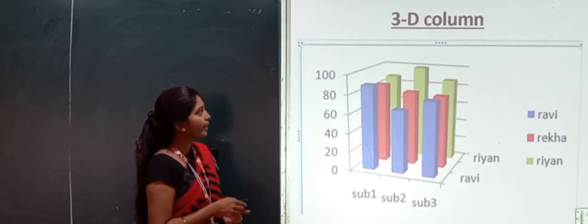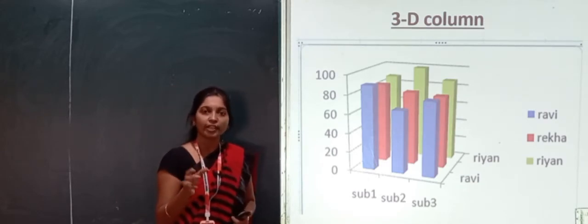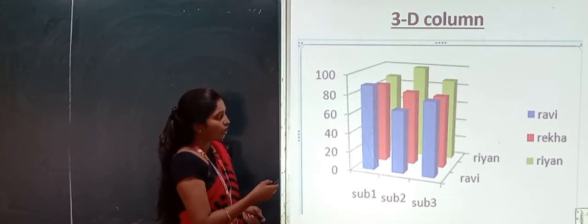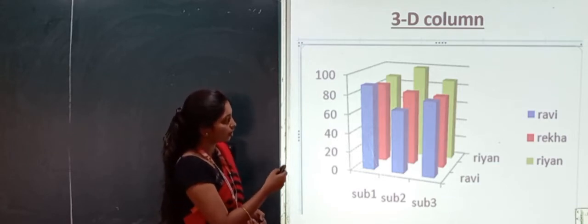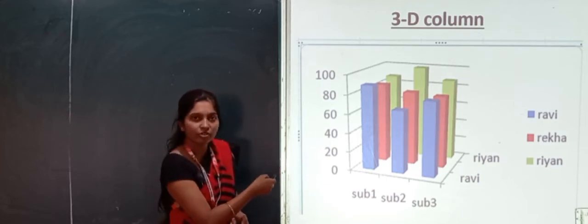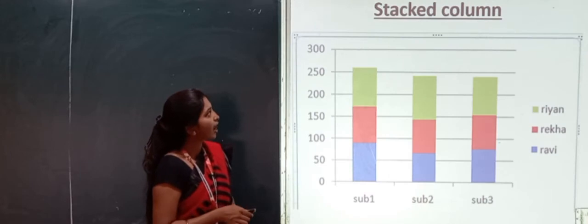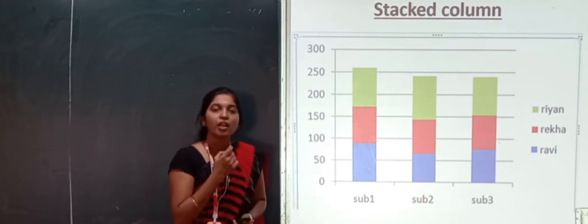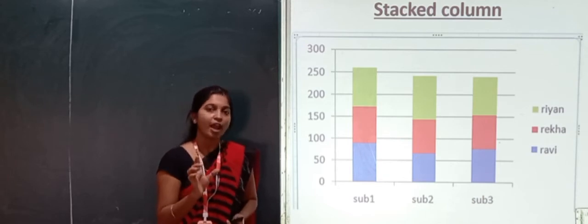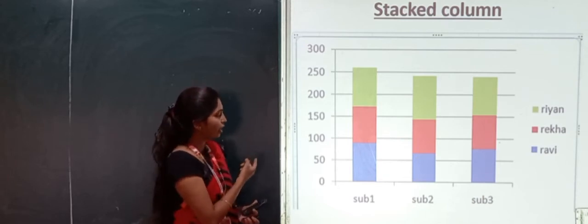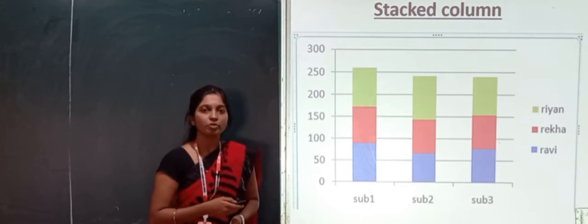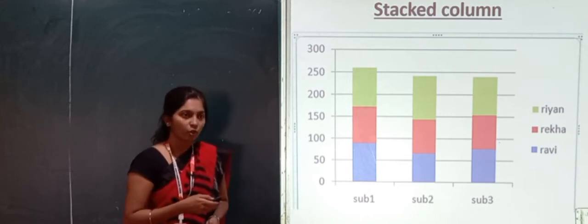Next one is 3D column. Now 3D, look at how it represents. This is 3D column chart. This also represents the same way. Ravi, Riyan, and Rekha's marks are represented in 3D views. This is 3D column. The last one is stacked column. Now 100% stacked column shows percentage wise. Only stacked column shows marks wise, represents them like this. This is how we have four types of column chart.